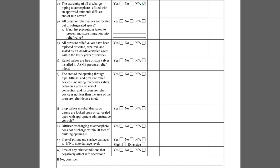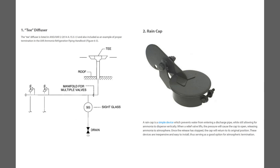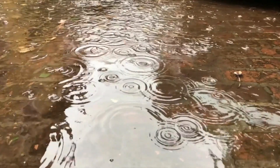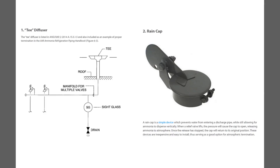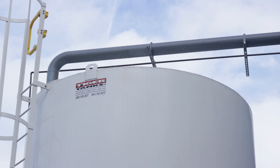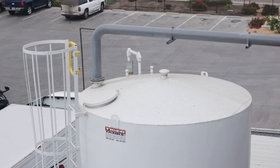Item O asks if the extremity of the relief valve termination pipe to the atmosphere is fitted with an approved ammonia diffuser and/or rain cover. If a relief system terminates to the atmosphere, the termination point may be susceptible to rain or snow, therefore means to prevent rain or snow from entering the pipe is required. IIAR Standard 2 states that permissible covers include a double 45 degree diffuser, a bull's horn diffuser, a self-closing flapper cap, a sock hood cover, or exterior stack extension diffuser. This relief system terminates into an ammonia diffusion tank, so the question is not applicable.